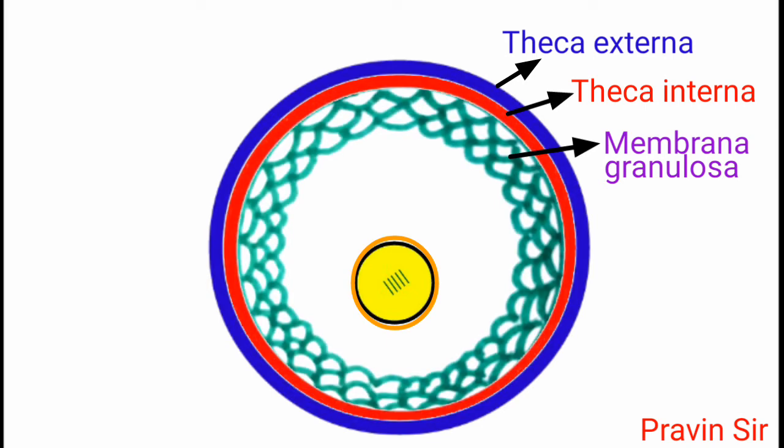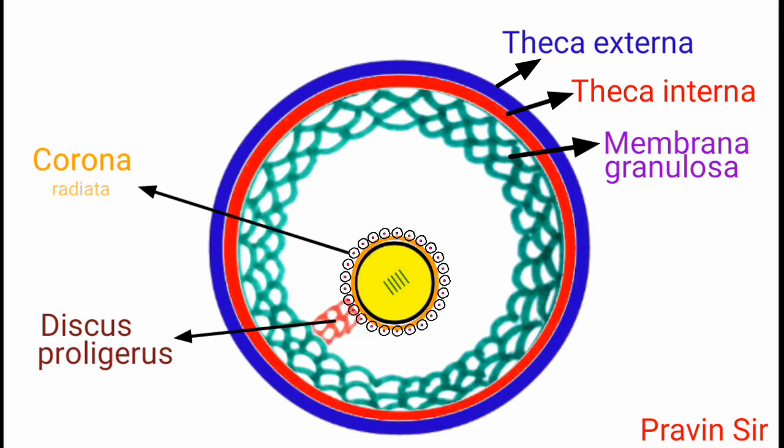From membrana granulosa, cells differentiate into discus proligerus. So this region is discus proligerus and corona radiata. So this region is corona radiata.